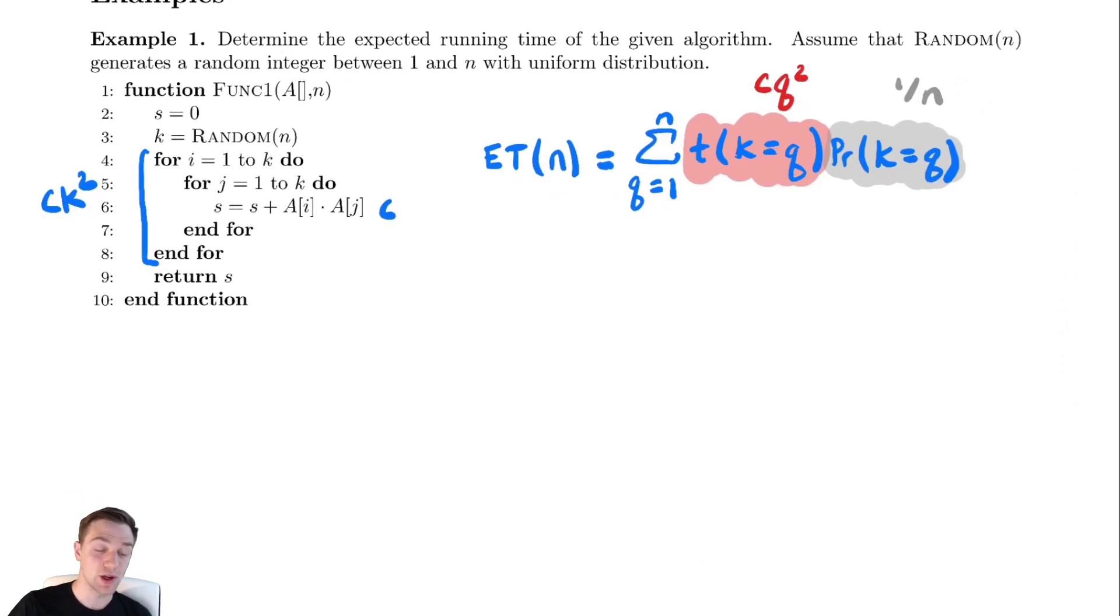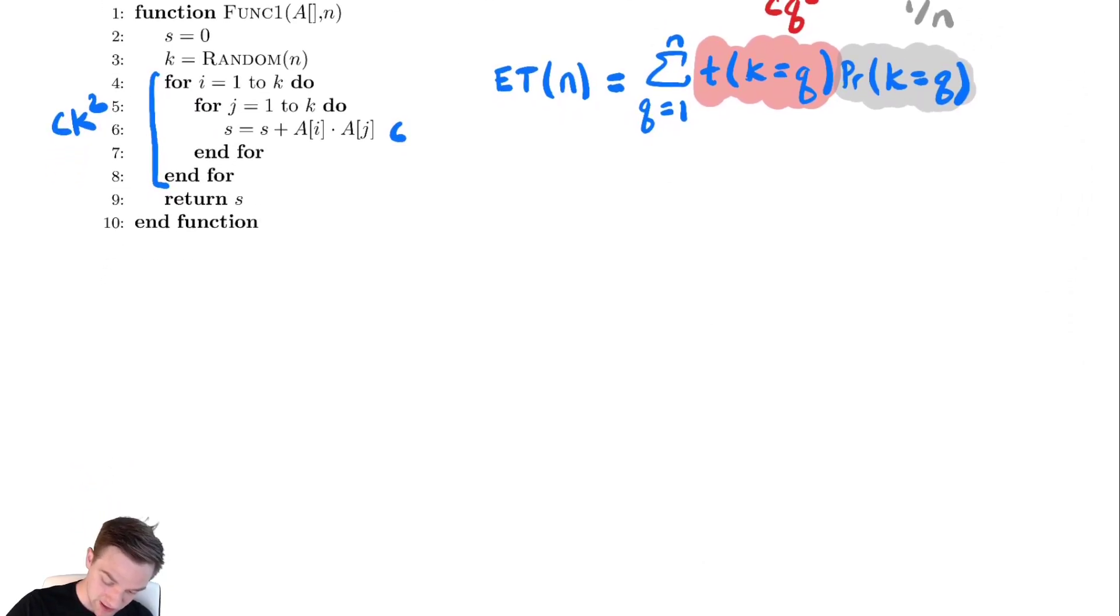Now, let's plug in those values and see what we get. The expected runtime, ET of n, is equal to the sum from q equals 1 to n of cq squared times 1 over n. I can factor the c and the 1 over n out, so we have c over n times the sum from q equals 1 to n of q squared.